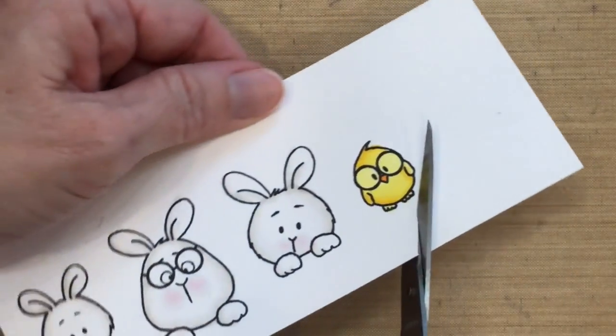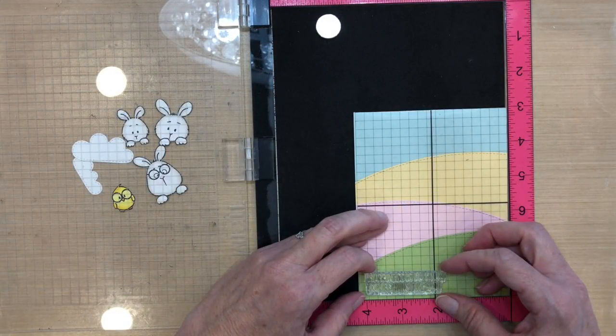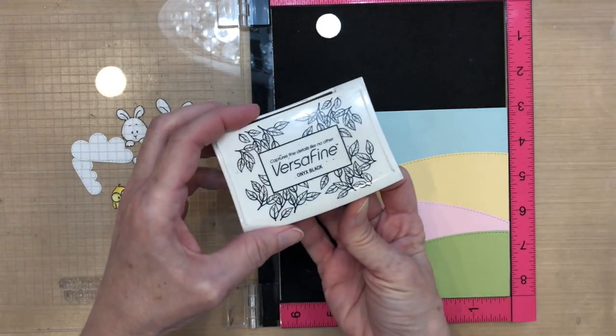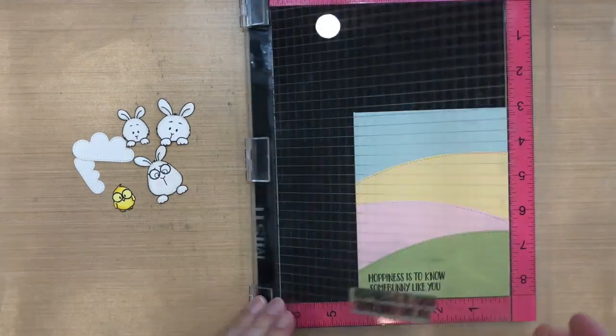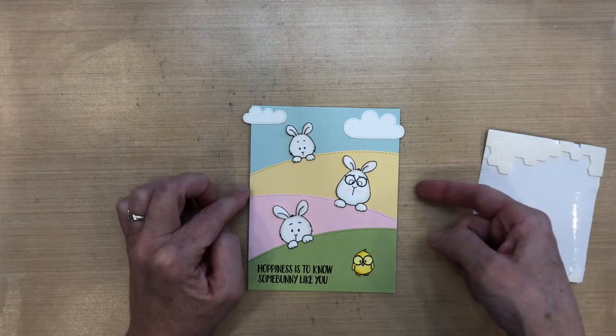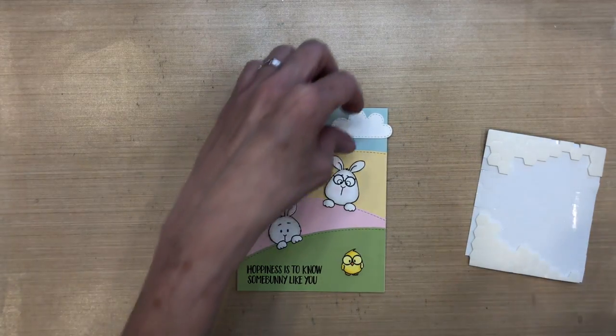All right, I do not have the dies as usual, so I went ahead and cut those out by hand. I'm going to do my sentiment next. I'm going to stamp it with some Versafine Black Onyx ink directly onto the green piece. And now I'm just positioning all of my elements.